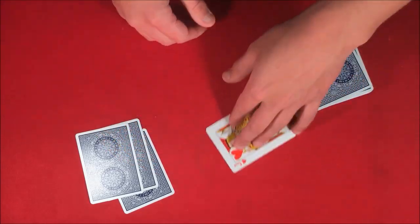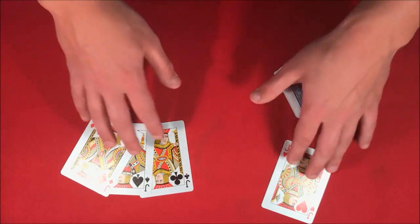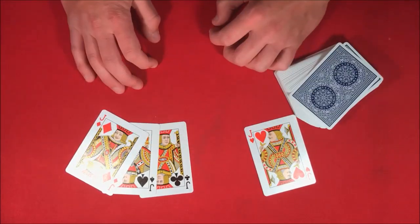But if your card, jack of hearts, is over here, then these three cards on the side must be the other three jacks. So this is the trick guys, and if you want to do it, don't forget to stick around for the tutorial.